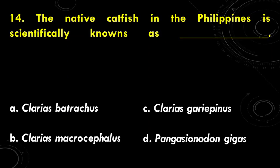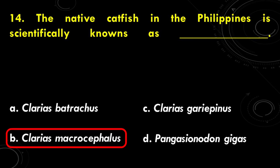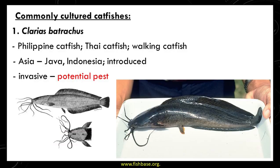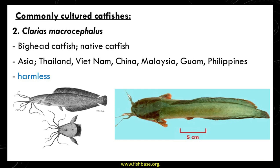Question 14: what is the scientific name of the native catfish in the Philippines? Is it A. Clarius batricus, B. Clarius macrocephalos, C. Clarius garapinus, or D. Pangasianidon hegas? The answer is Clarius macrocephalos, letter B. Clarius batricus, or the Philippine or Thai catfish, has been imported in the Philippines and is an invasive species with the potential to be a pest. Clarius macrocephalos, or the big head or native catfish, is found only in Asia, particularly in Thailand, Vietnam, China, Malaysia, Guam, and the Philippines, and is considered a harmless species.